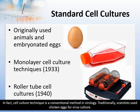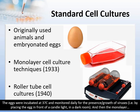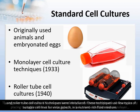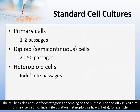Cell culture technique is a conventional method in virology. Traditionally, scientists used chicken eggs for virus culture. The eggs were incubated at 37 degrees and monitored daily for the presence or growth of viruses, for example by placing the egg in front of a candle light in a dark room. Then monolayer and roller-tube cell culture techniques were introduced. These techniques use a few types of suitable cell lines for virus growth in a nutrient-rich fluid medium. The cell lines also consist of a few categories depending on the purpose, from primary cells for one-time culture to indefinite duration using heteroploid cells such as HeLa cells.